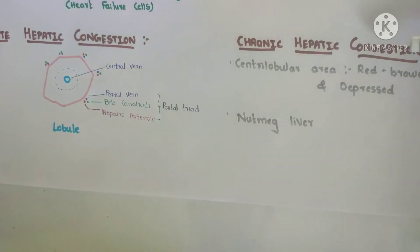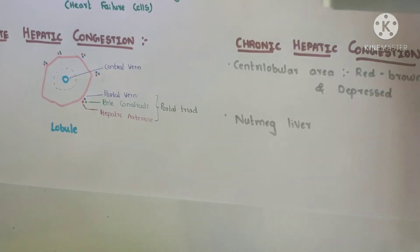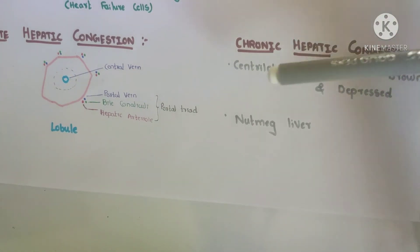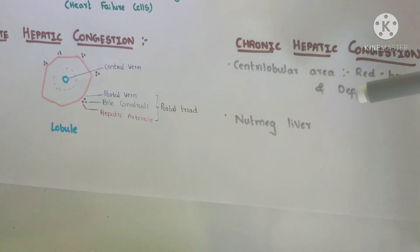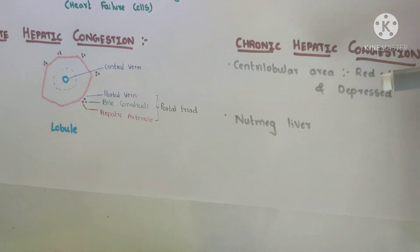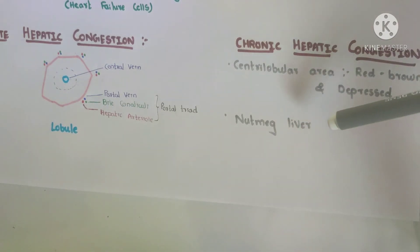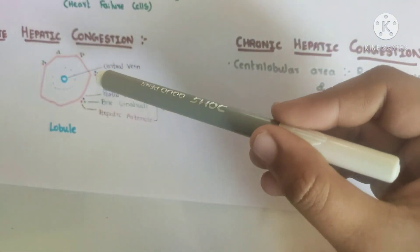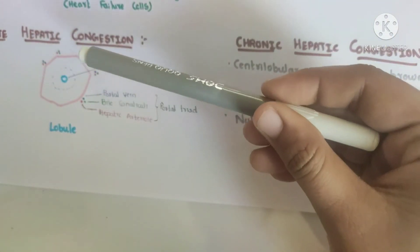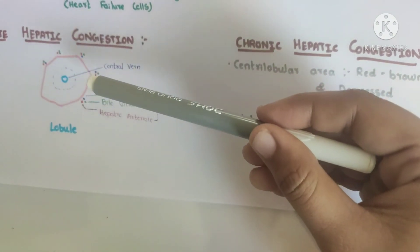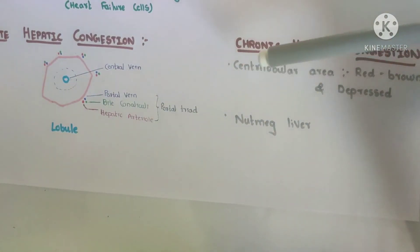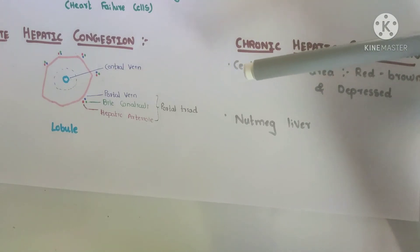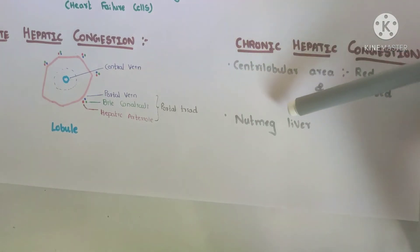If this hepatic congestion becomes chronic, due to cell death in the centrilobular area and hemorrhage, there will be a reddish-brown appearance and it will become depressed. The perilobular area, which is less congested, will have a tan liver-like appearance. So we will see an alternating dark and light appearance, which is known as nutmeg liver.